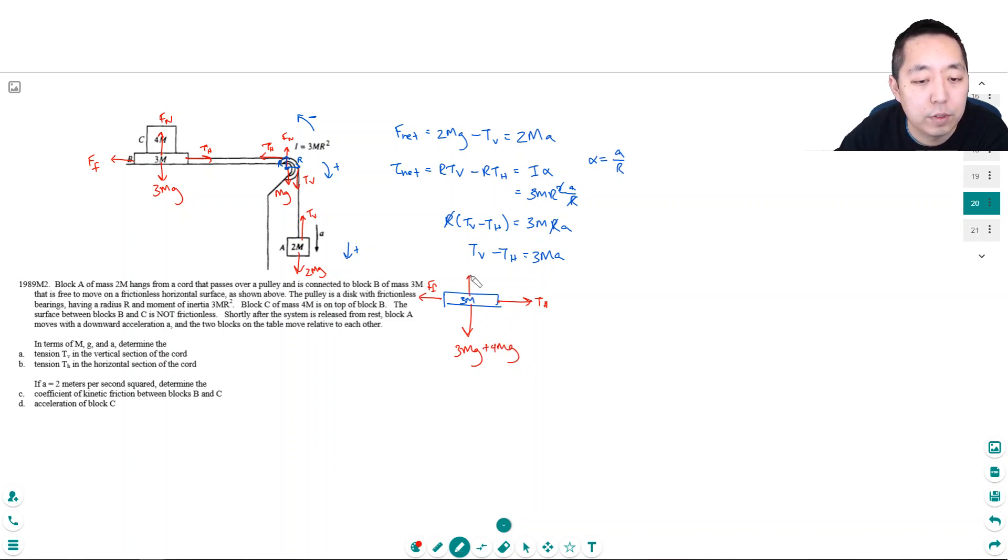And then I have a normal force because this thing is pushing down on this block. If I were the 3m block, I would feel the weight pushing down on me. Now the 4m block... Let me draw more square. Has 4mG going down and it has the normal force...